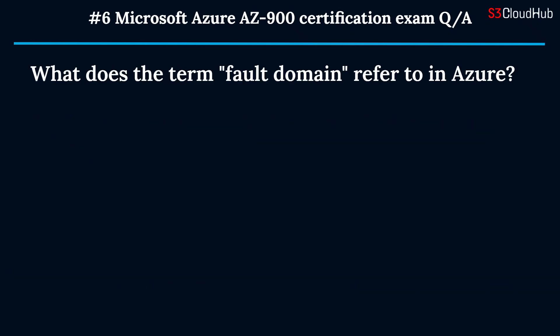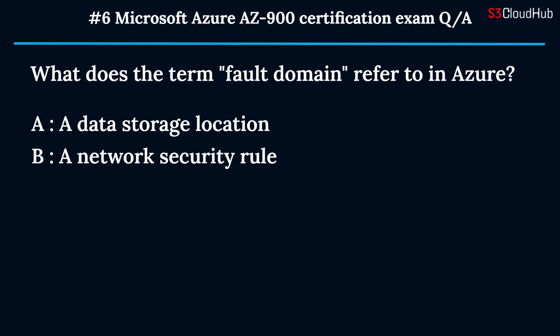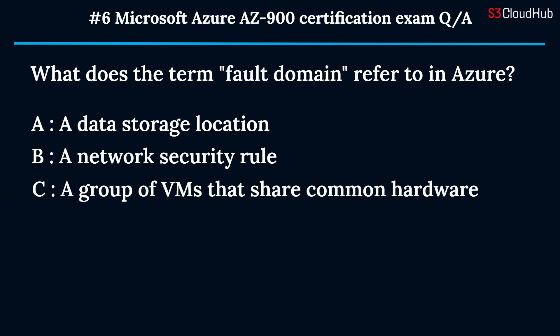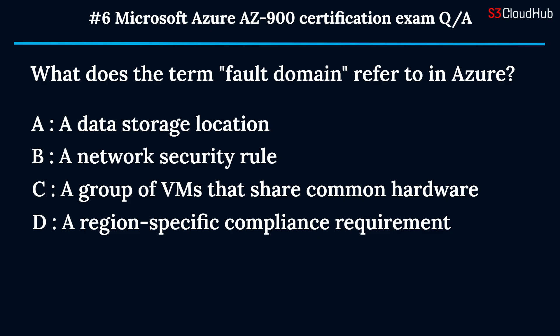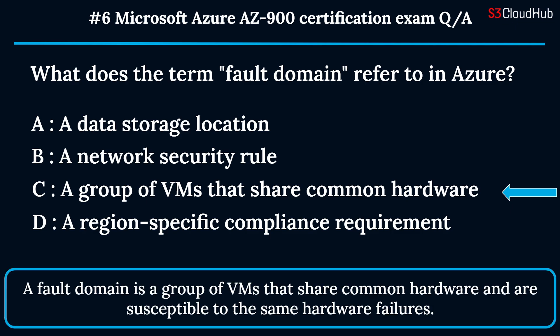The sixth question: what does the term fault domain refer to in Azure? Option A: a data storage location. Option B: a network security rule. Option C: a group of VMs that share common hardware. Option D: a region-specific compliance requirement. The correct answer is option C. A fault domain is a group of VMs that share common hardware and are susceptible to the same hardware failures.